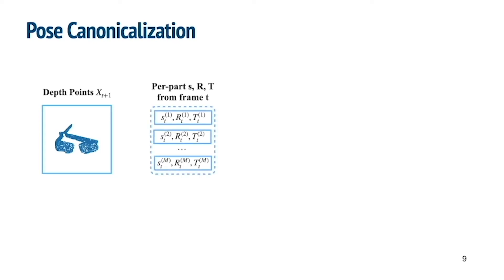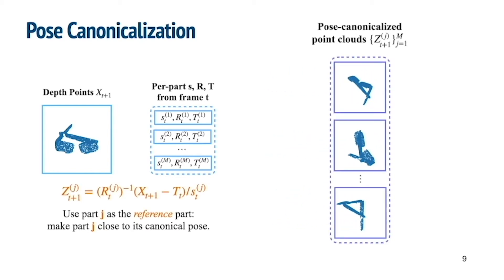Let's first delve into our pose canonicalization module, and see how we leverage the predicted pose from the previous frame. Given the depth point cloud from the current frame and the per-part poses from the previous frame, for each part J, we multiply the depth point cloud with the inverse of the previously estimated part pose, so that part J gets close to its canonical pose.